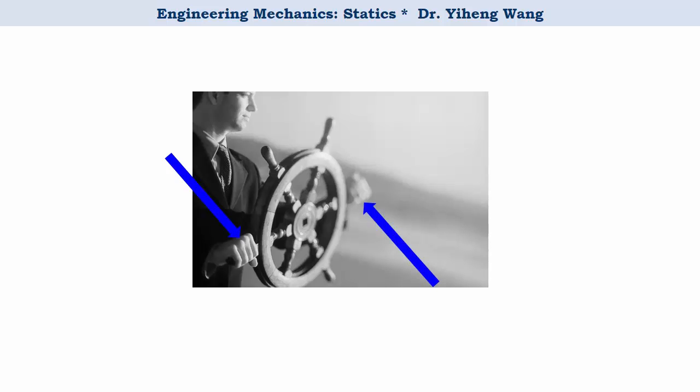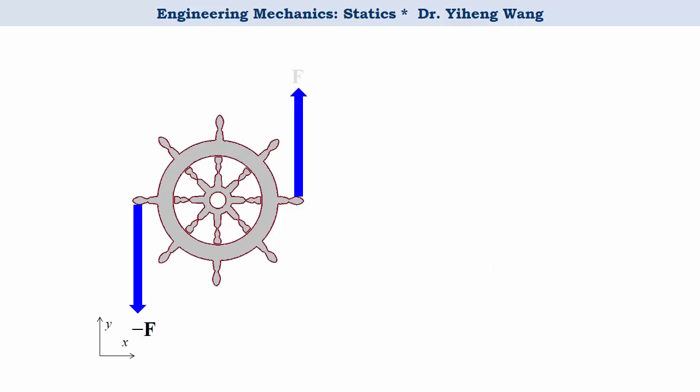Let's analyze these two forces. Assume the two forces are of the same magnitude and opposite direction, therefore they can be known as F and negative F, and they each have a perpendicular distance of half a d from the center of the wheel, point O.